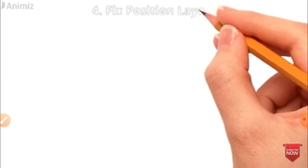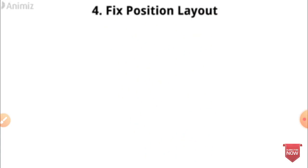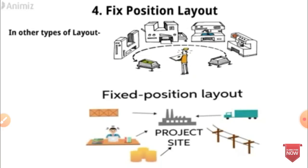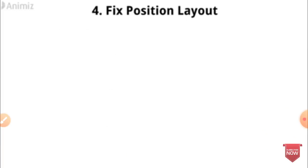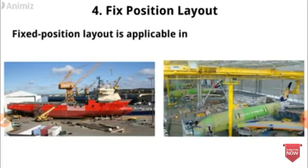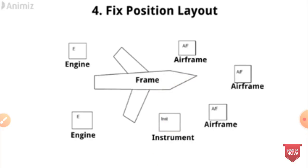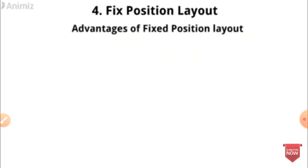The fourth type is Fixed Position Layout. In Fixed Position Layout, the product stays in one place and workers/machines come to it. It is applicable in marine industries and aeroplane manufacturing. For example: the airframe remains fixed and engines and other components are assembled around it.